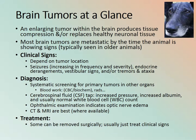Brain tumors: an enlarging tumor within the brain produces tissue compression and/or replaces healthy neuronal tissue. Most brain tumors are metastatic by the time the animal is showing signs. Clinical signs depend on the location of the tumor and can include seizures increasing in frequency and severity, endocrine derangement, vestibular signs, and/or tremor and ataxia.